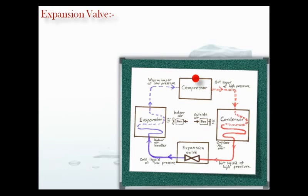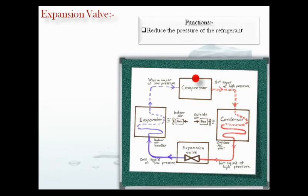The thermostatic expansion valve performs the following functions. First, it reduces the pressure of the refrigerant. The first and foremost function is to reduce the pressure of the refrigerant from the condenser pressure to the evaporator pressure. The thermostatic expansion valve has a constriction or orifice through which the pressure of the refrigerant drops suddenly to the level of evaporator pressure. Due to this, the temperature of the refrigerant also drops down suddenly, producing a cooling effect inside the evaporator.